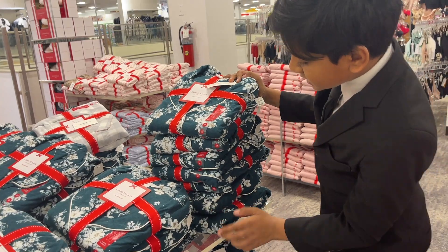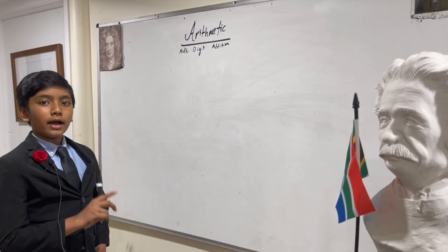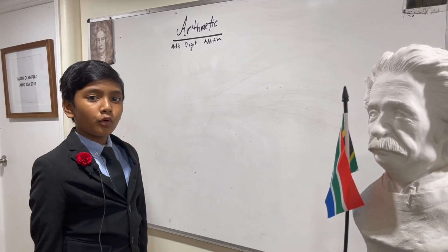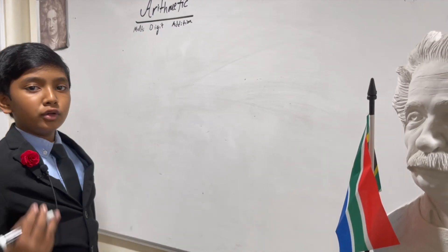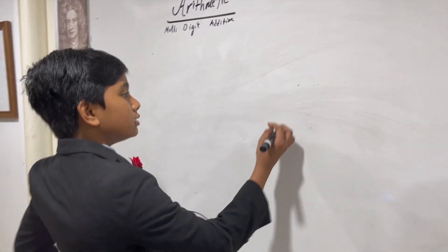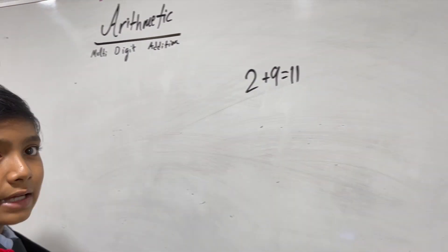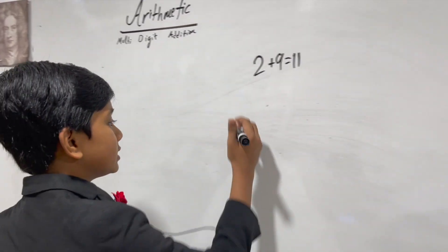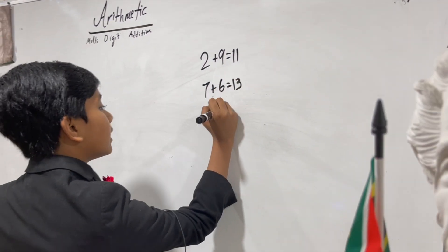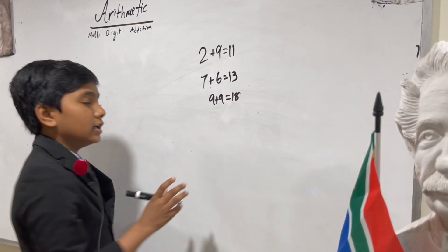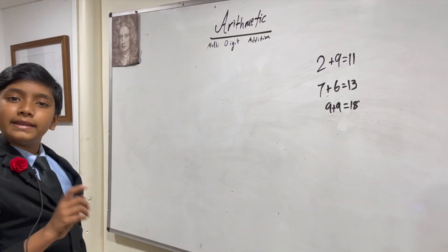How do we do multi-digit addition? Well, if you recall your normal addition facts where you add all of the numbers from one to nine together, you should by now recall all of your regular addition facts like, for example, two plus nine is eleven, seven plus six is thirteen, nine plus nine is eighteen, and so on and so forth. So that's what we're gonna need today.